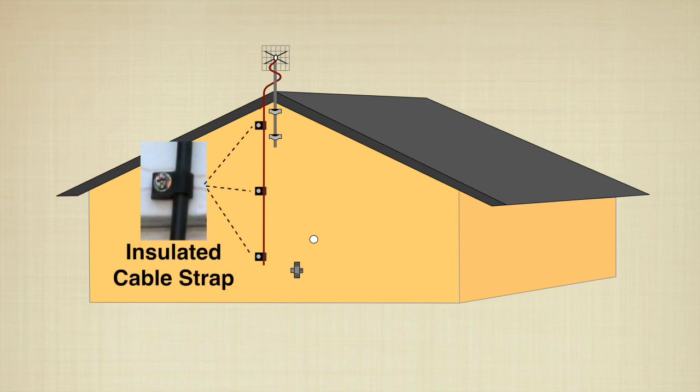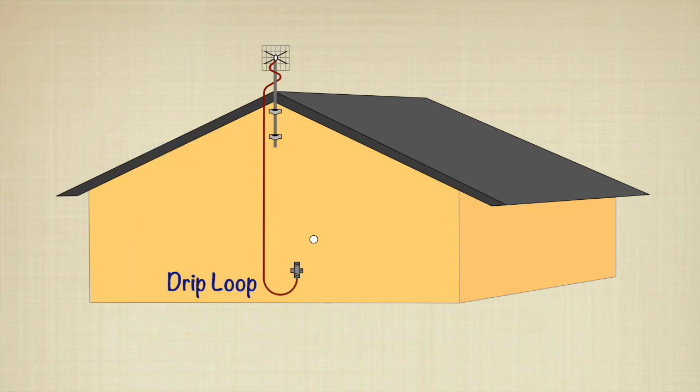Secure the cable with insulated cable straps. Loop the cable at the bottom to allow rain to drip off the loop instead of collecting at the home conduit. Connect the cable to the ground block.